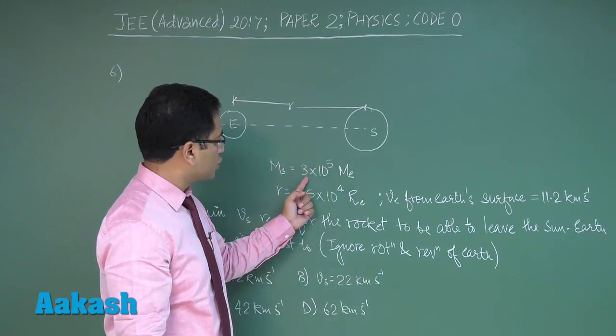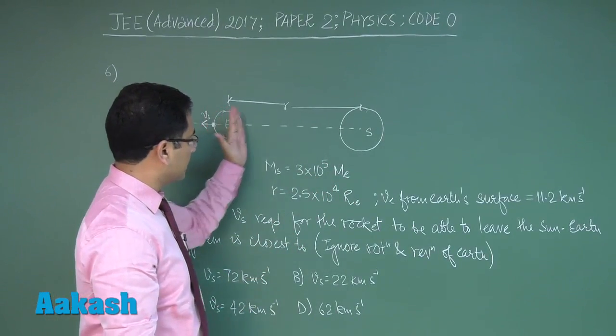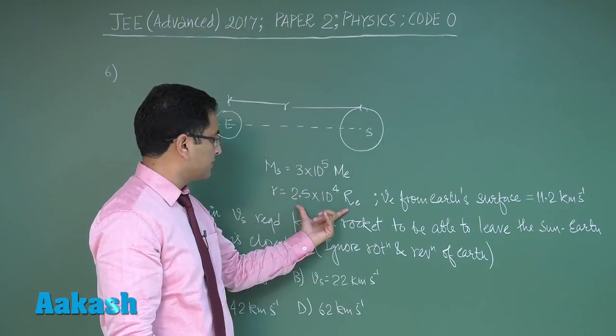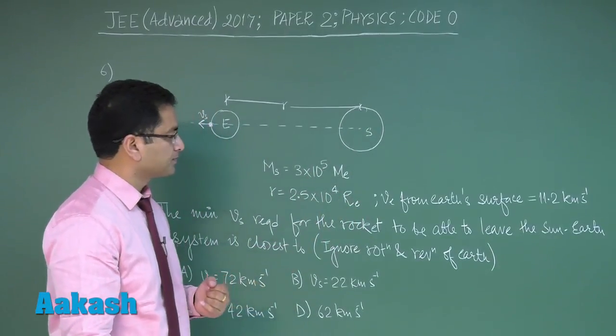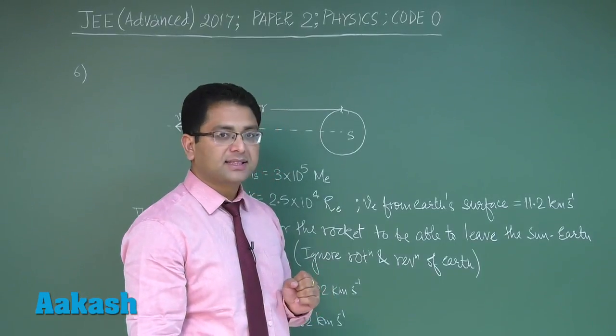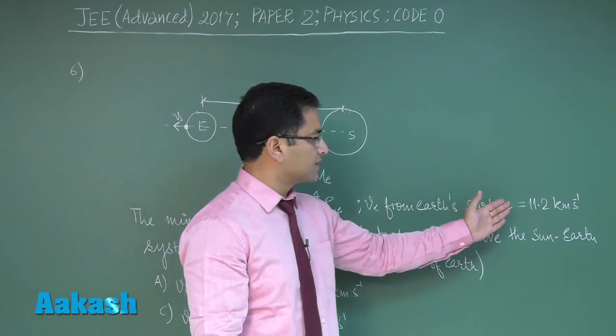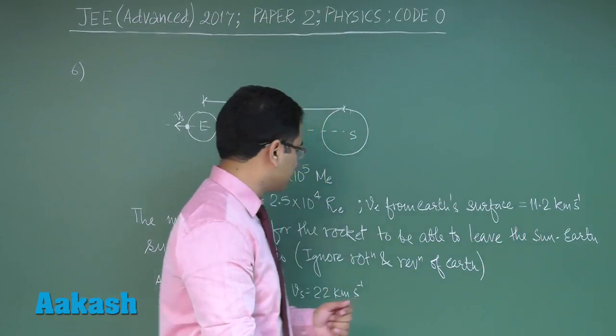Mass of the sun is given as so many times mass of earth, and the distance between earth and sun is given to be this much times the radius of earth. Additionally, for the sake of calculation simplicity, escape velocity value is given from the earth surface which is so much kilometer per second.